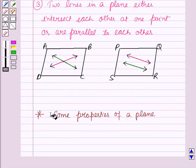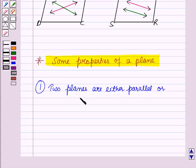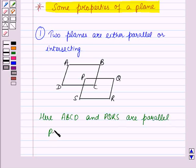Now let us see some properties of a plane. First is, two planes are either parallel or intersecting. Now here the planes ABCD and PQRS are parallel planes.